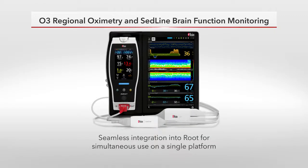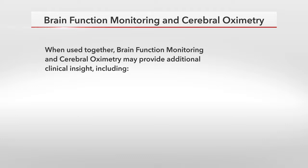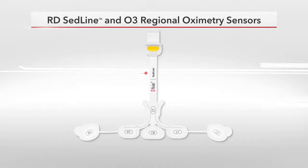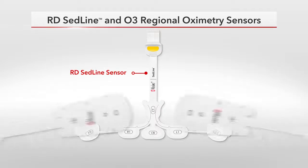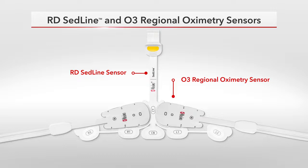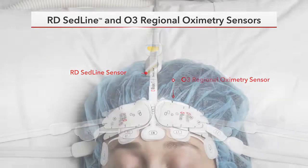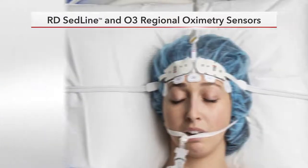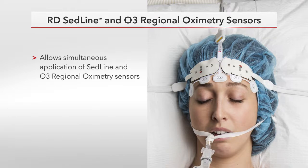SED-Line and O3 seamlessly integrate into Root for simultaneous use on a single platform. When used together, brain function monitoring and cerebral oximetry may provide additional clinical insight, including increased visibility into hemodynamic stability during anesthesia and insight into brain injury patients in the ICU. The RD SED-Line sensor allows for simultaneous application of SED-Line and O3 sensors with soft foam pads to improve patient comfort.